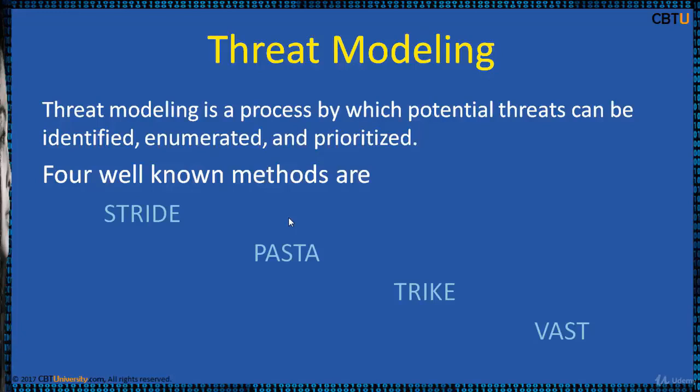Threat modeling helps in identifying the high-value assets, assets vulnerable to attack, and possible tracking of attack vectors. There are four well-known methods of threat modeling: STRIDE, PASTA, TRIKE, and VAST.